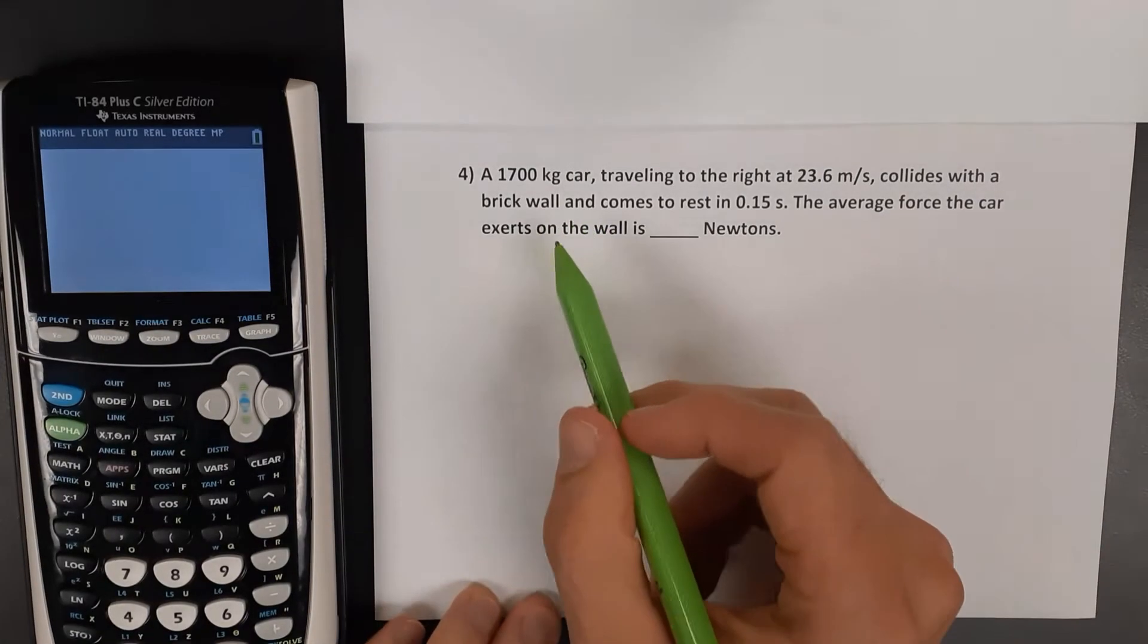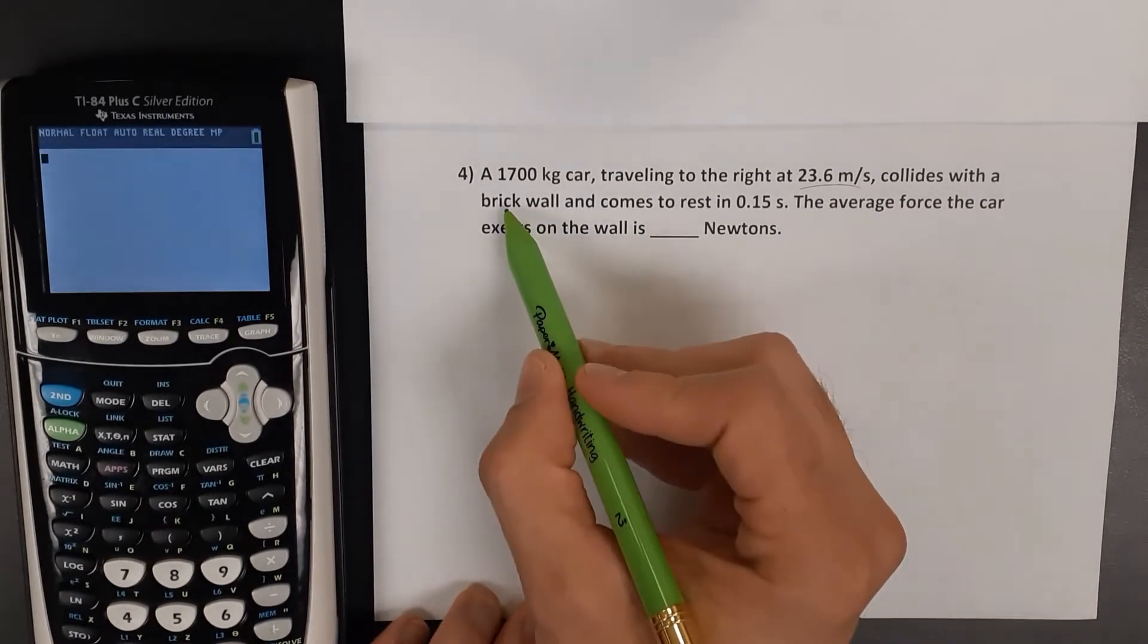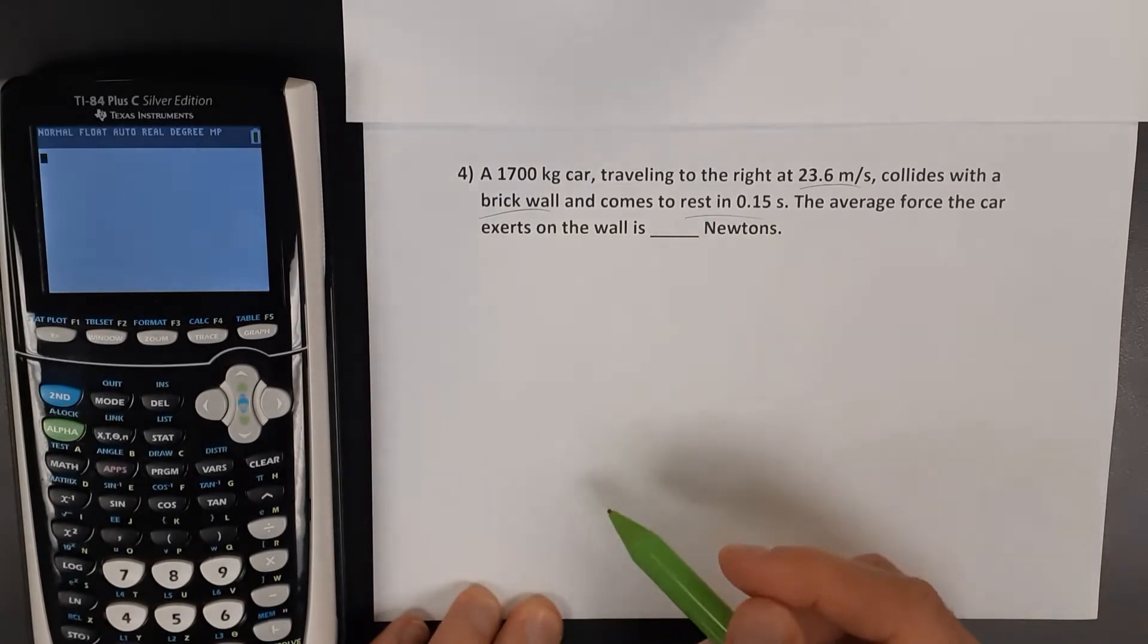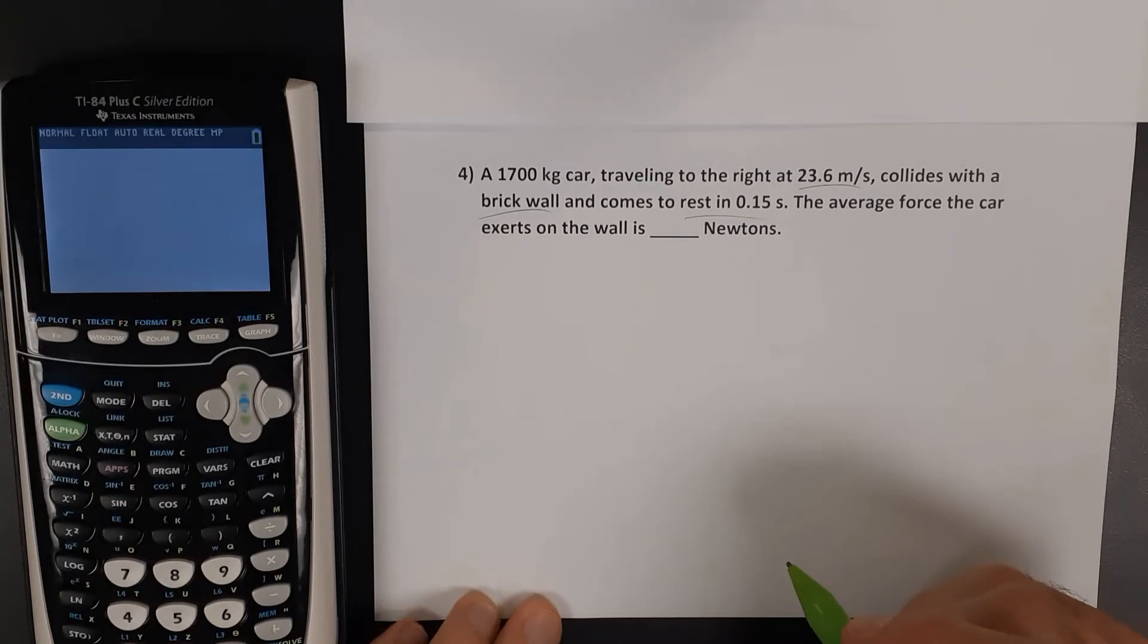In this problem, a car is traveling to the right at 23.6 meters per second, collides with the wall, and comes to a stop. What is the average force exerted on the wall?